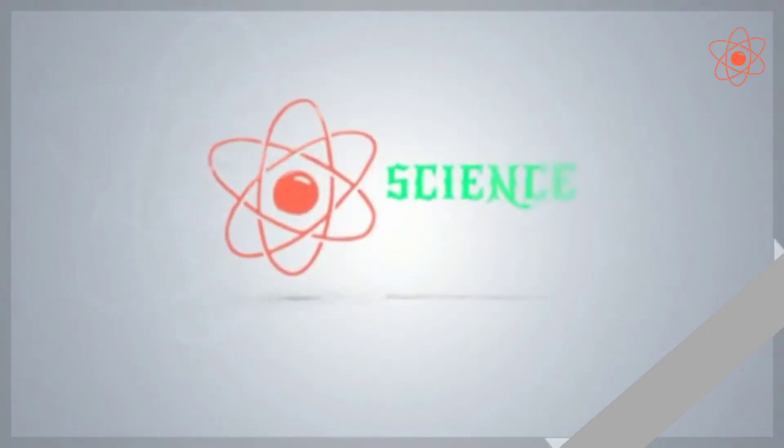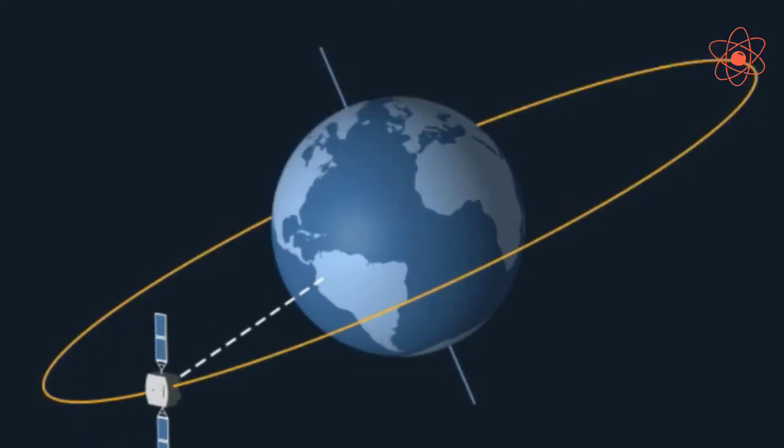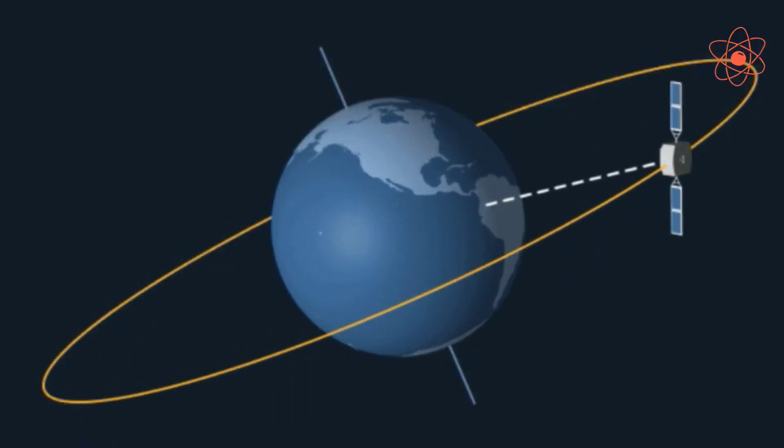Greetings of the day dear students. Today we will discuss about satellites. A celestial body revolving around a planet is called a satellite.